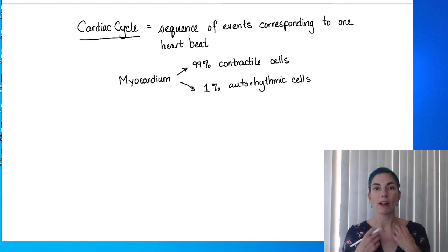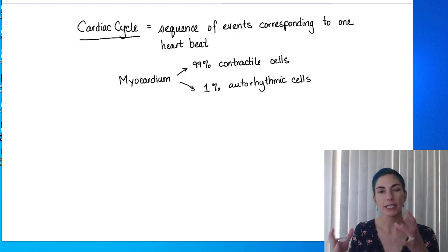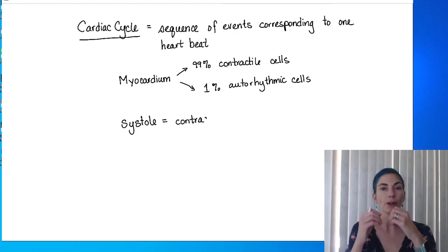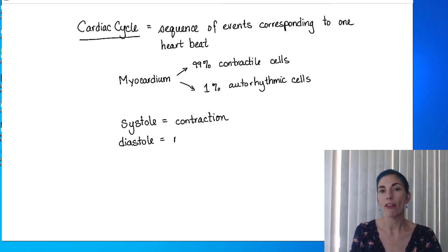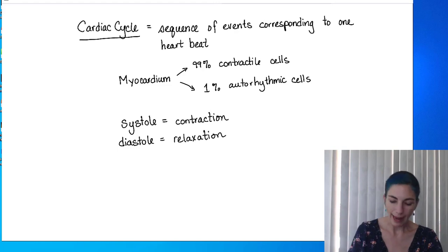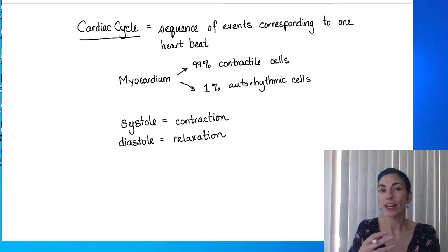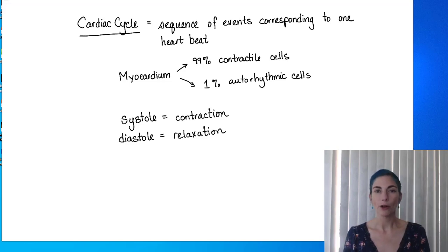Two key terms: systole refers to the contraction — the shortening and compression of the myocardium. Diastole refers to the relaxation of that myocardium. At any given time, parts of the heart may be in systole while other parts are in diastole, so these terms apply to segments of the heart, not the entire heart at once.